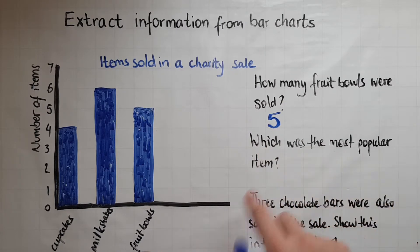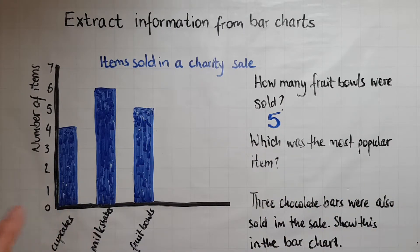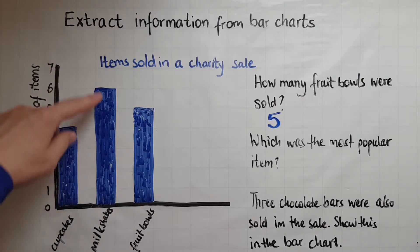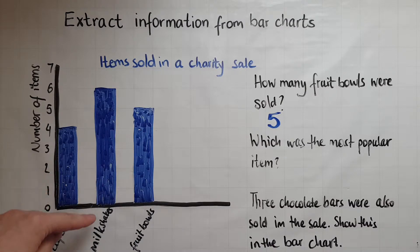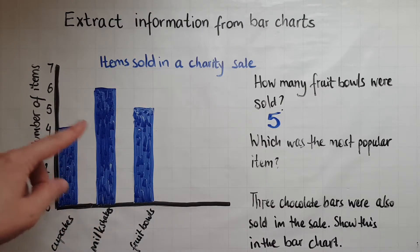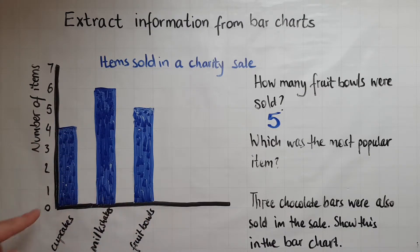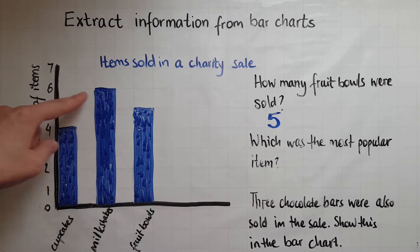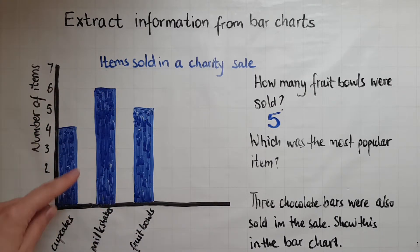Which was the most popular item? The most popular item, as you can see, is the highest bar, which means there were more milkshakes sold than there were fruit bowls or cupcakes. So we've got six of them, and that item is milkshakes.